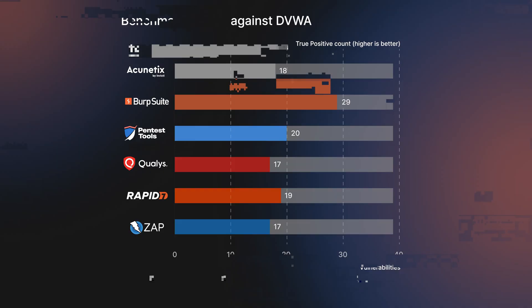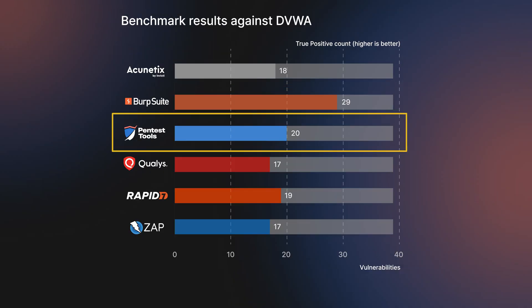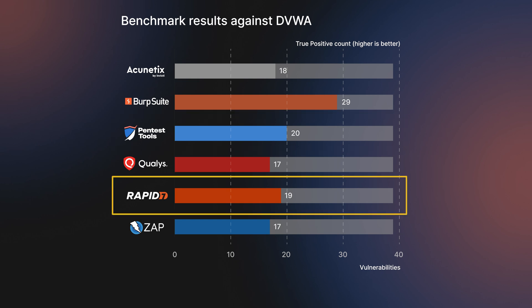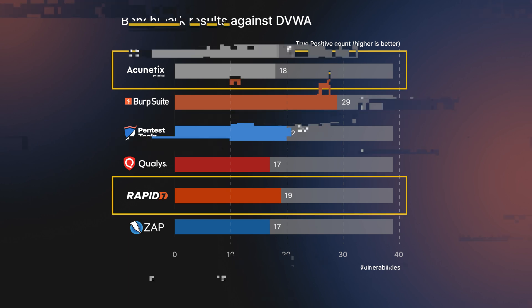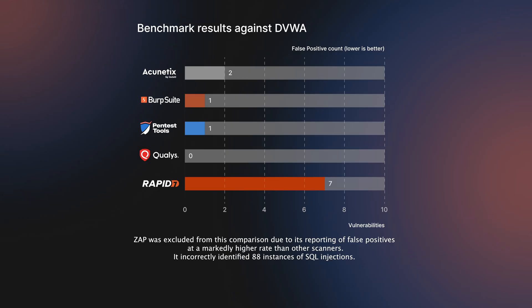In the DVWA tests, Burp led with 29 out of 39 vulnerabilities detected. The pentesttools.com Website Vulnerability Scanner came in second, followed by Rapid7 InsideVM and Acunetix. ZAP, however, reported a significantly higher rate of false positives, especially when detecting SQL injection vulnerabilities, which impacted its overall ranking.